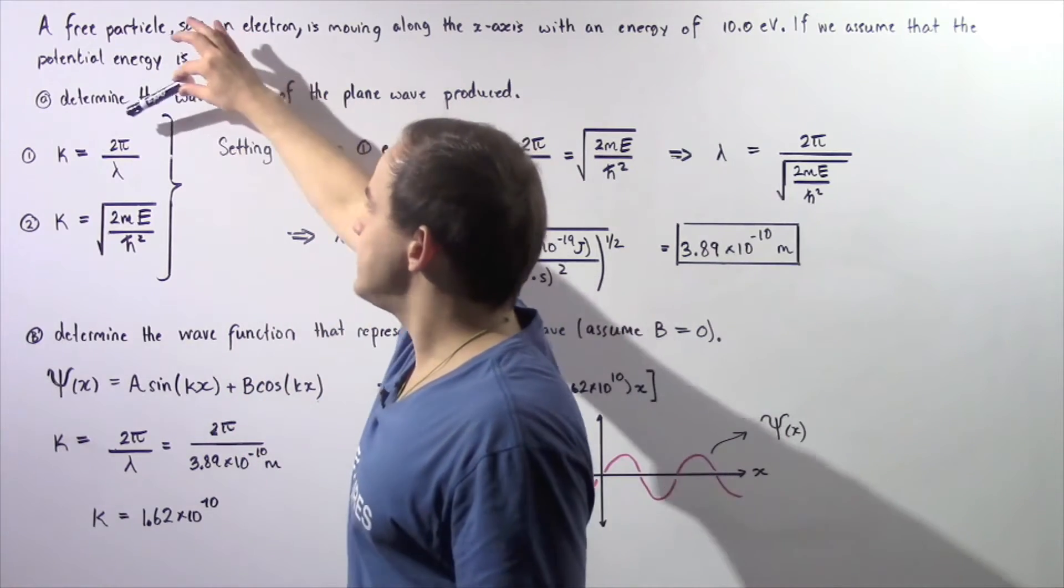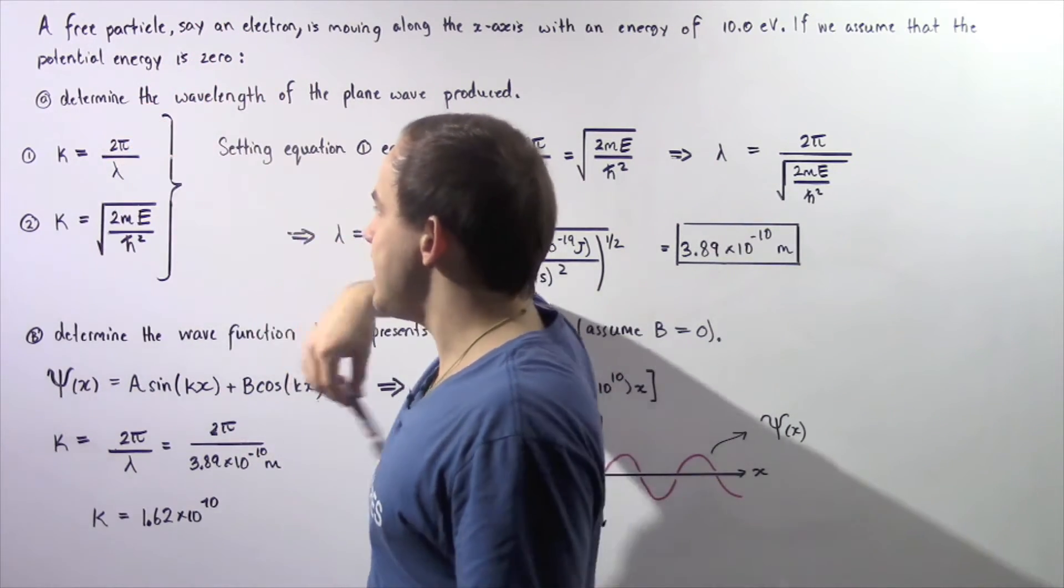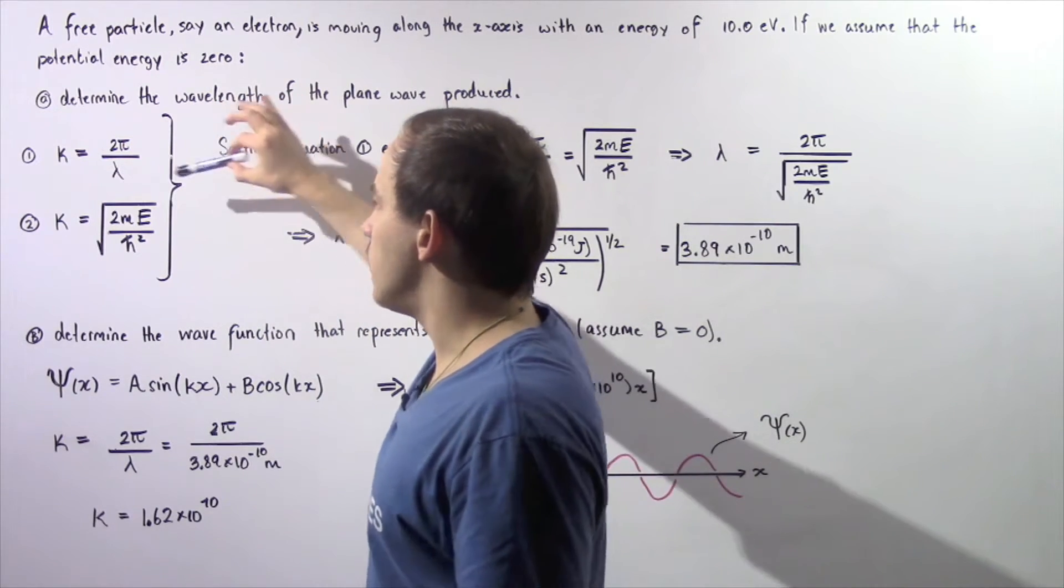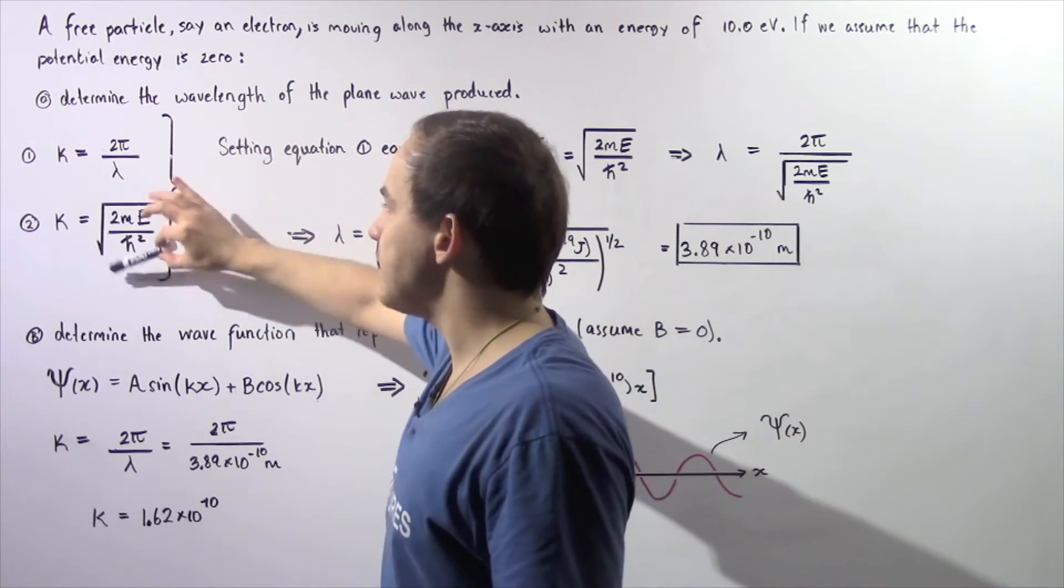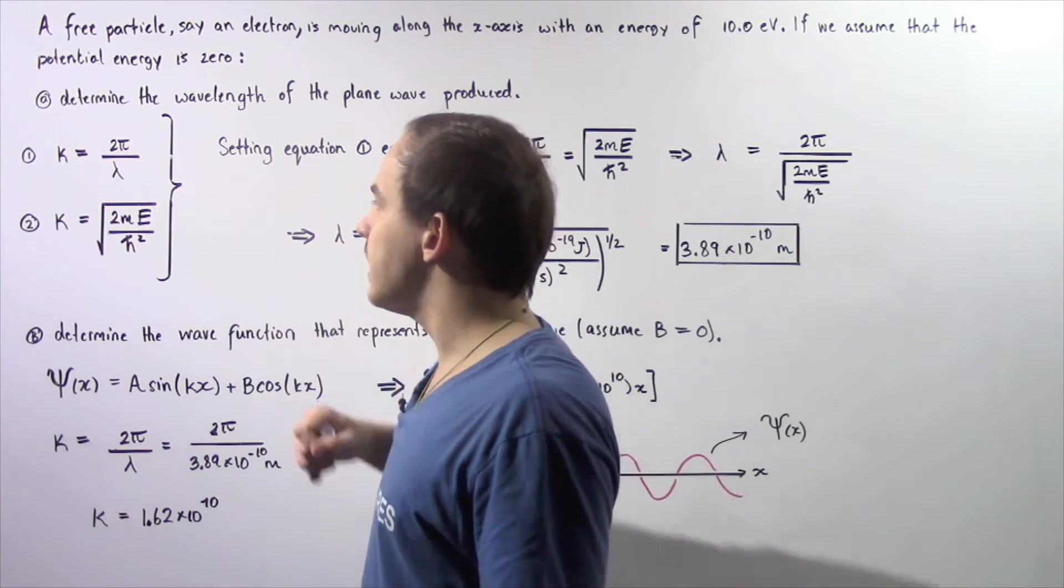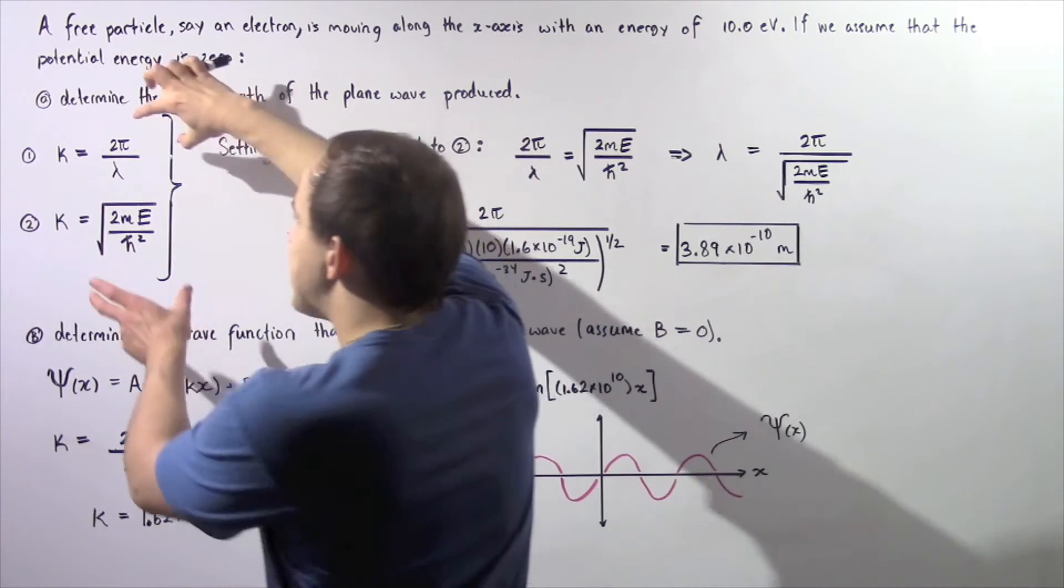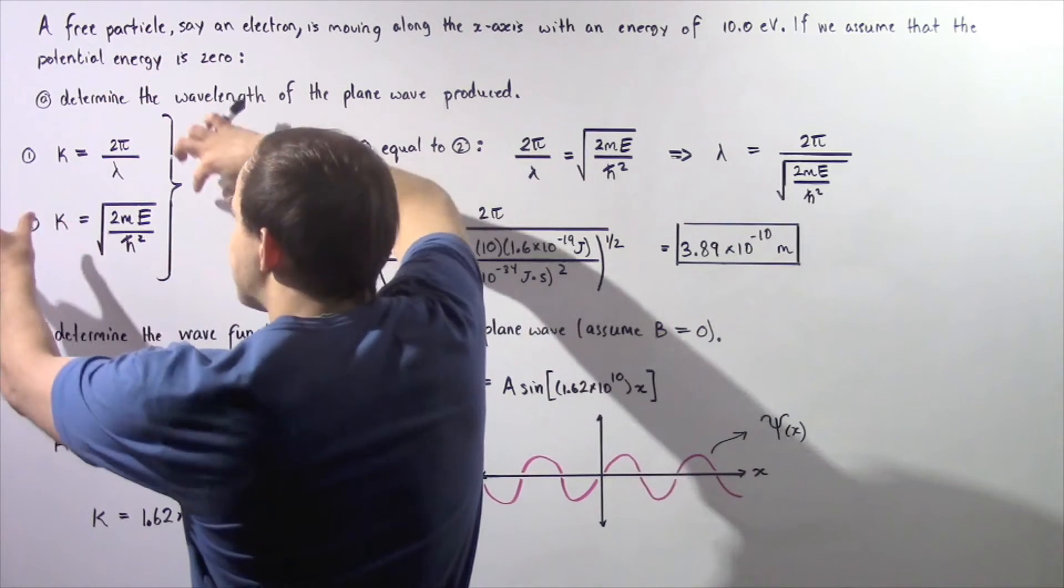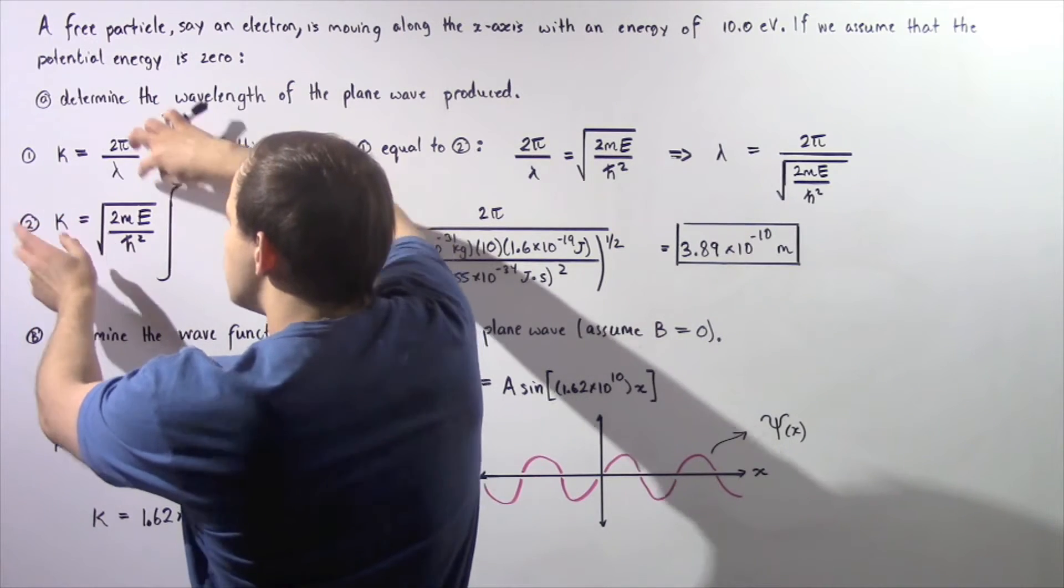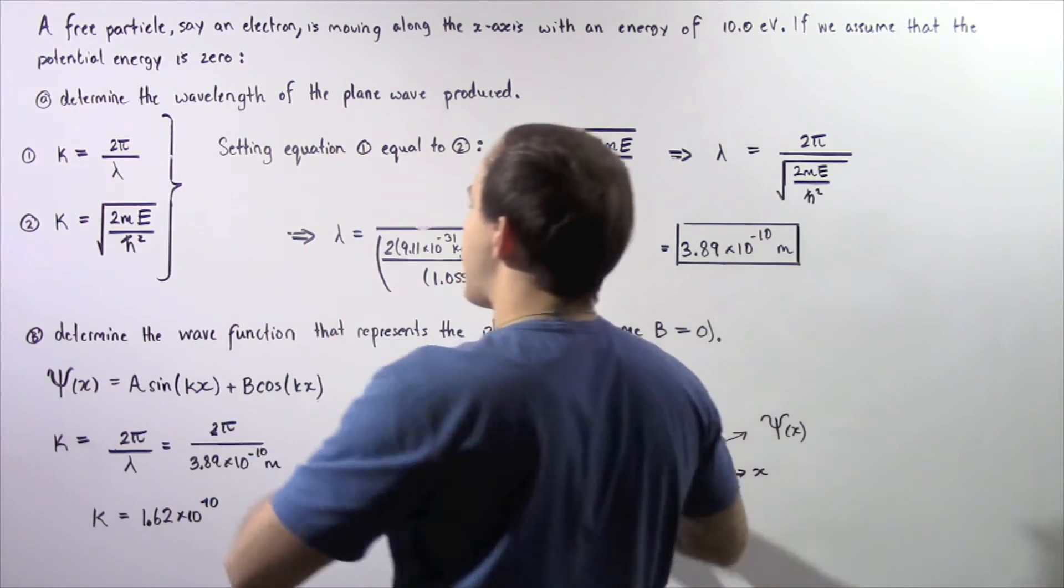k, our constant, is either equal to 2π divided by λ or it's equal to the square root of 2mE divided by ℏ squared. So to calculate what our λ is knowing the mass and our energy, we can take these two equations, set them equal to one another so that k will cancel out, and then we can solve for our λ.